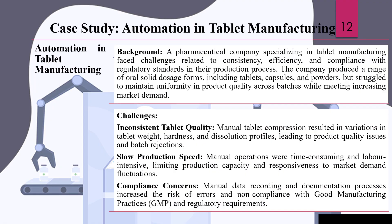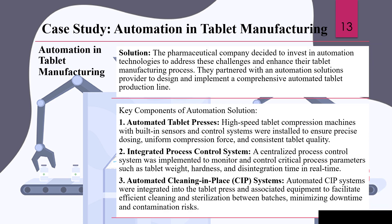Automation in tablet manufacturing: first, some challenges that have been faced include inconsistent tablet quality. Manual tablet compression machines resulted in variations in tablet weight, hardness, and dissolution profiles, leading to product quality issues. Second, slow production speeds — manual operations were time-consuming and labor-intensive, limiting production capacity and responsiveness to market demands. Third, compliance concerns — manual data recording and documentation processes increased the risk of errors and non-compliance with good manufacturing practices and regulatory requirements.